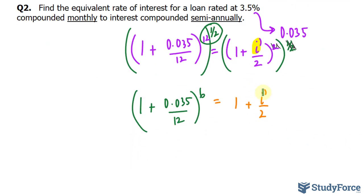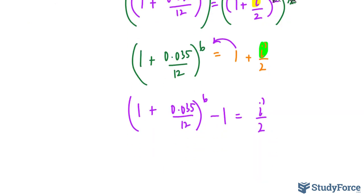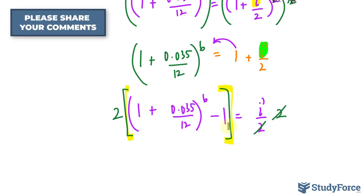And we again solve for I prime. We'll bring this one over. So we have 1 plus 0.035 over 12 raised to the power of 6 minus 1 is equal to I prime over 2. And we can now multiply both sides by 2, which will get rid of the 2's on the right side. And that right there is our expression that will give us I prime. And notice that I placed all of this expression within brackets. You have to do that.